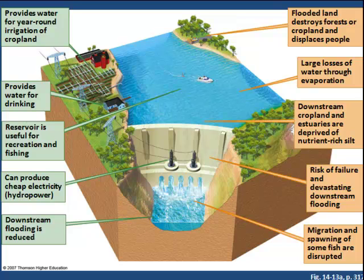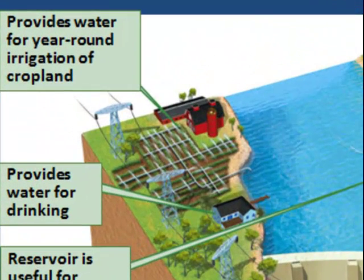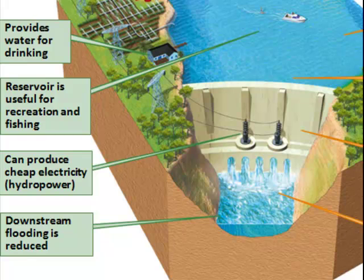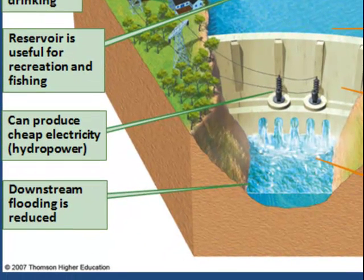This is a typical diagram of a hydroelectric dam from page 317 of your textbook. On the left are some benefits of dams: they provide year-round drinking water and recreation, they can produce hydroelectric power, they can control flooding downstream, and they can provide farmers with a steady supply of water for agriculture.